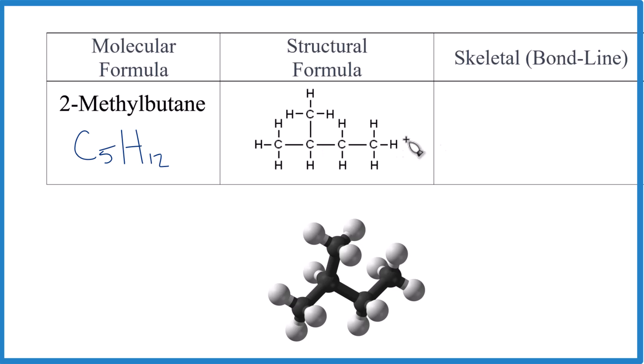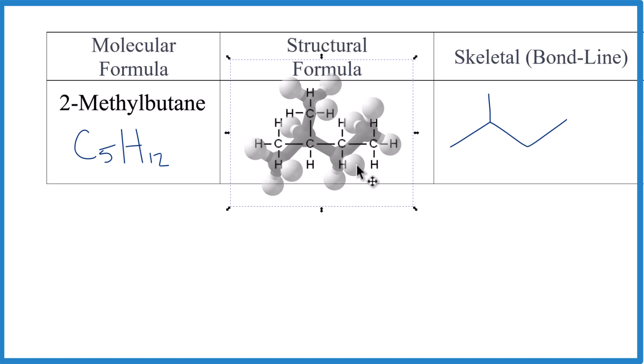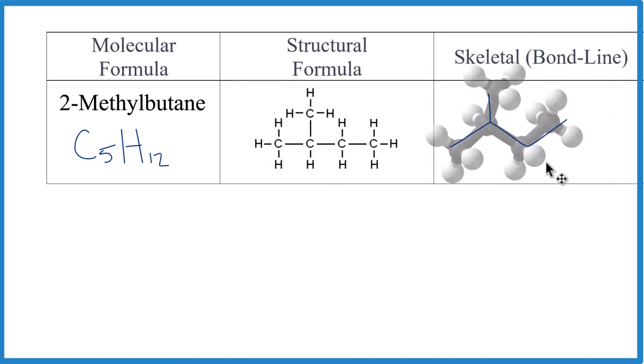Let's write the skeletal. So we have one, two, three, four, one, two, three, four. And then we have this carbon here. So we'll just put a line here. We don't draw the hydrogens or the carbons because it's the skeletal formula or the bond line formula, as it's sometimes called. We lay this over top. You can see how it lines up over here. It lines up as well.